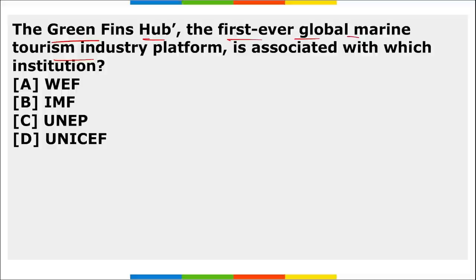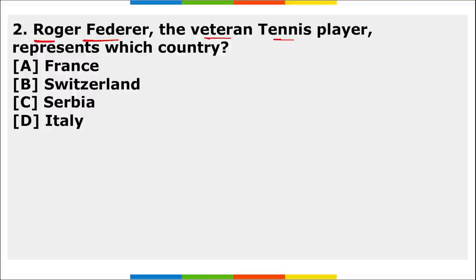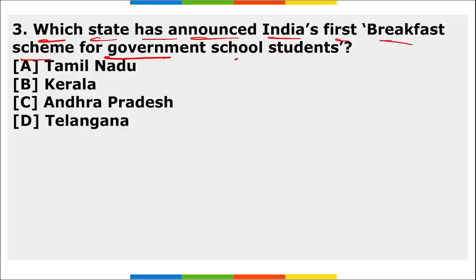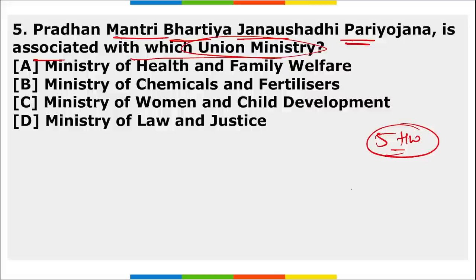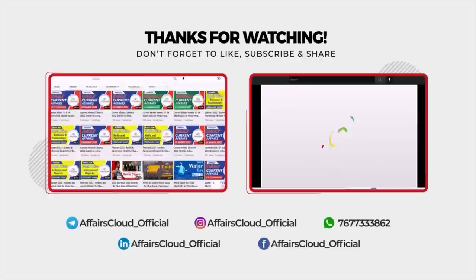Now for your homework: Which institution is Green Fins Hub — the first-ever global marine tourism industry platform — associated with? Which country did veteran tennis player Roger Federer represent? Which state announced India's first breakfast scheme for government school students? Which institution organized the Angan 2022 conference? Which union ministry is the fifth Pradhan Mantri Bharatiya Janaushadhi Pariyojana associated with? No cheating — comment below with your answers. If you find the session interesting, let us know in the comments.